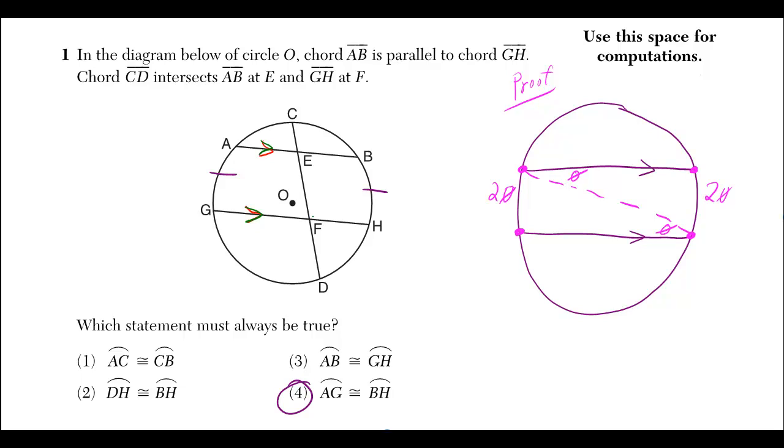AG is going to be congruent to BH. And why do we know that? It's because if you have parallel lines, then the arcs that are in between are going to be equal.